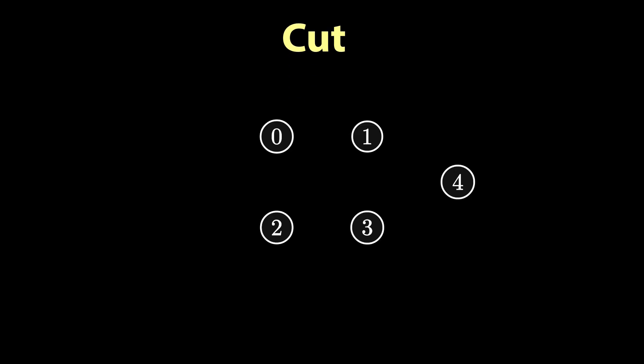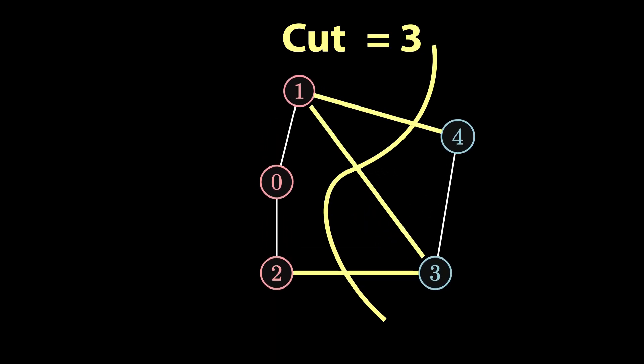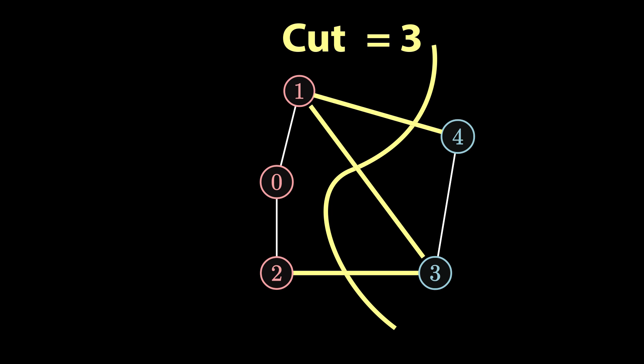Where is MaxCut? Let's forget about the max part for now. What does it mean to cut a graph? For that, you first need a graph — a bunch of nodes and edges between them. To cut the graph, you need to color each node with either one of two colors, for example blue or red. The value of the cut is then the number of broken edges, that is, edges that have their endpoints colored with two different colors.